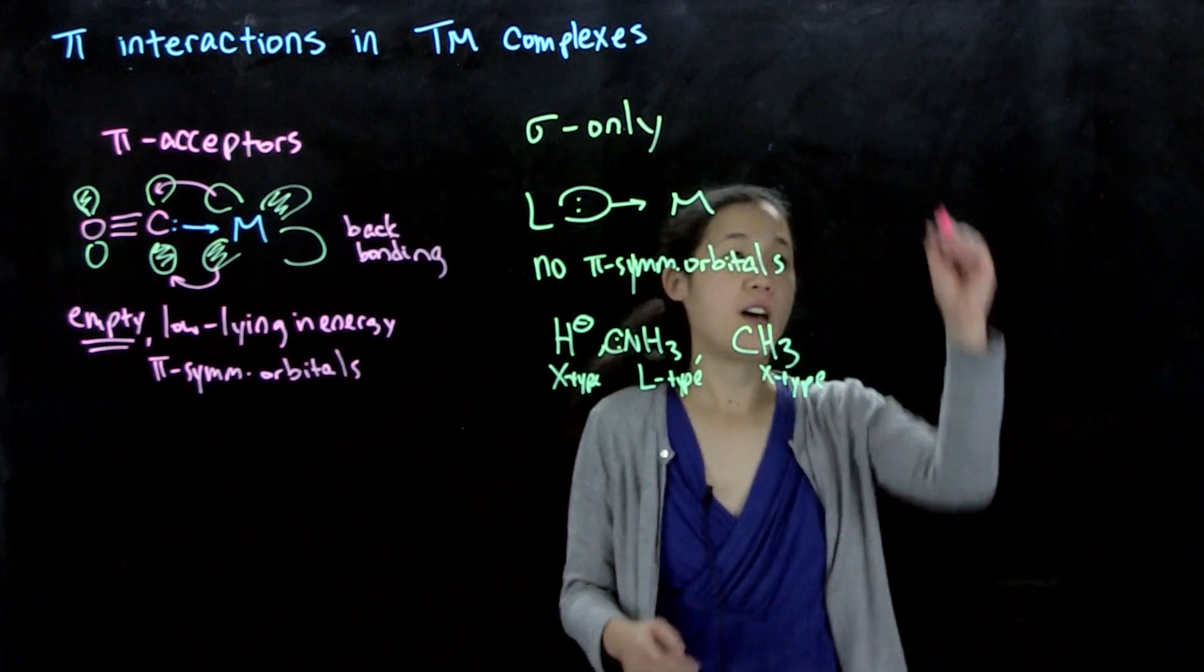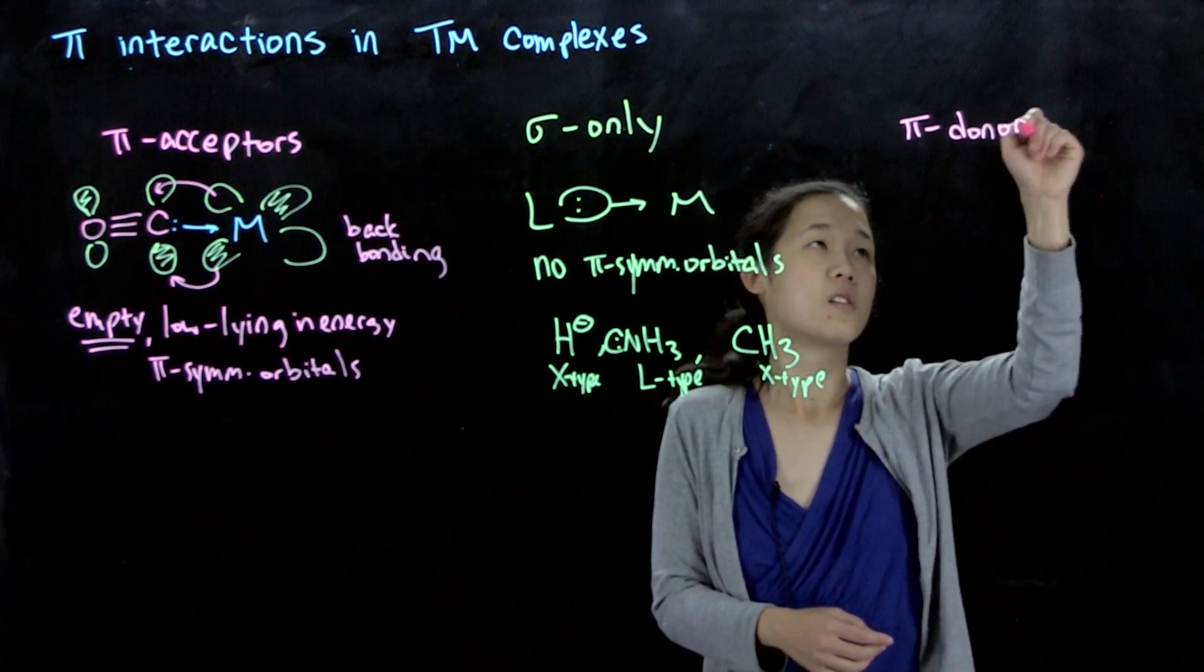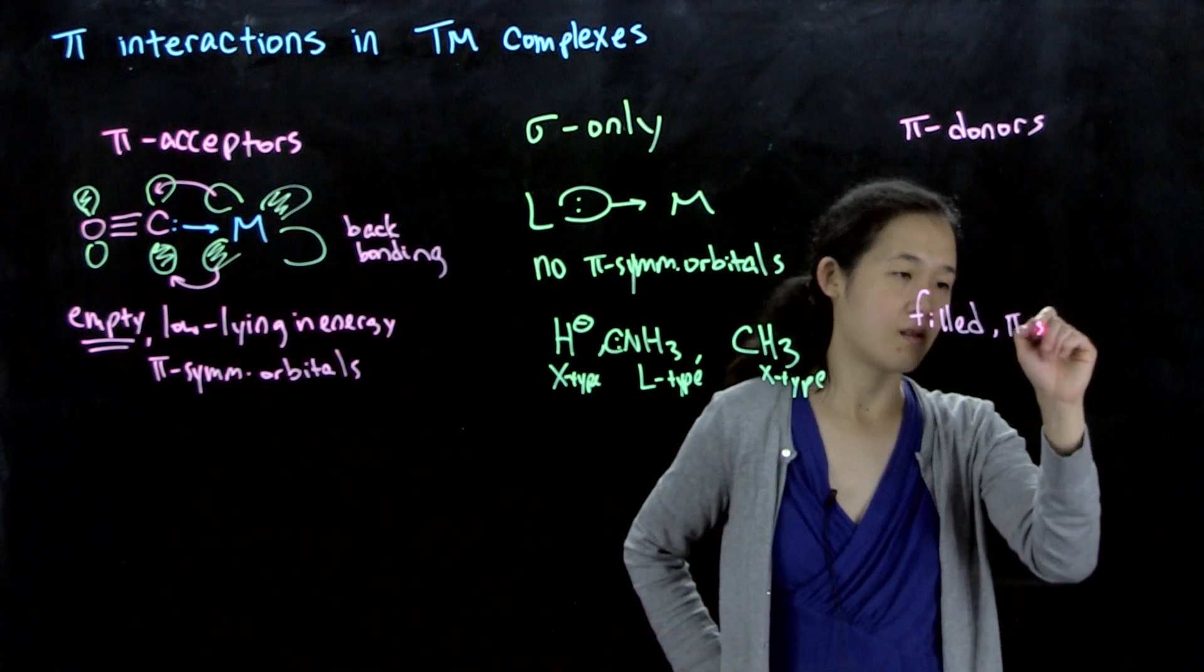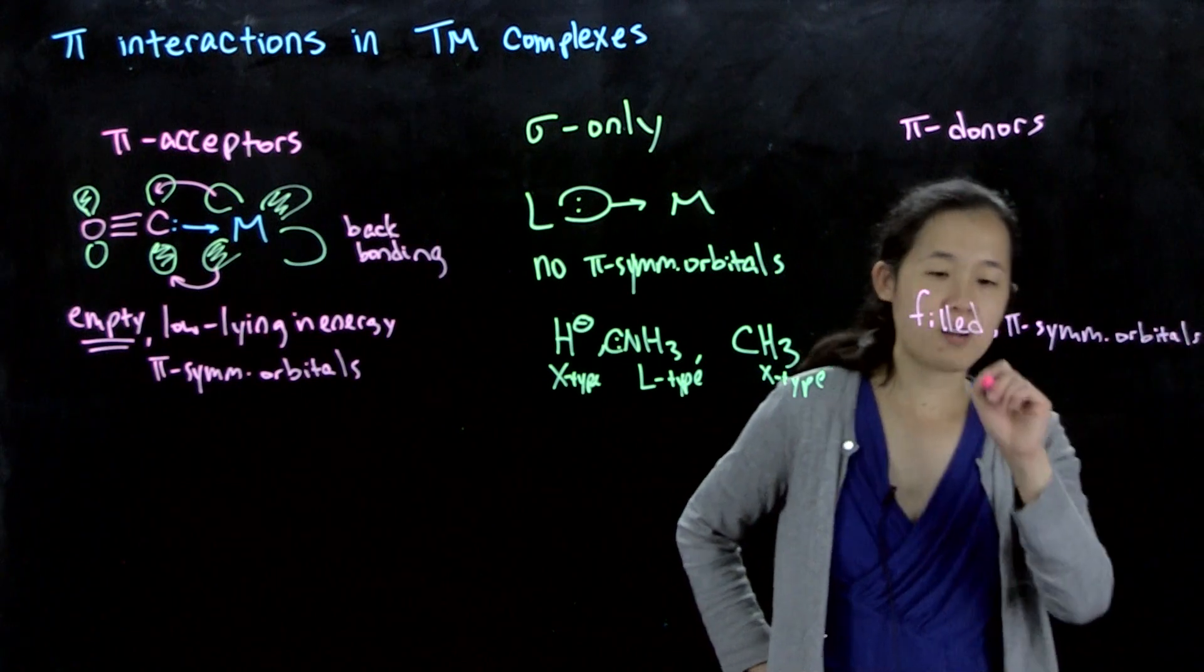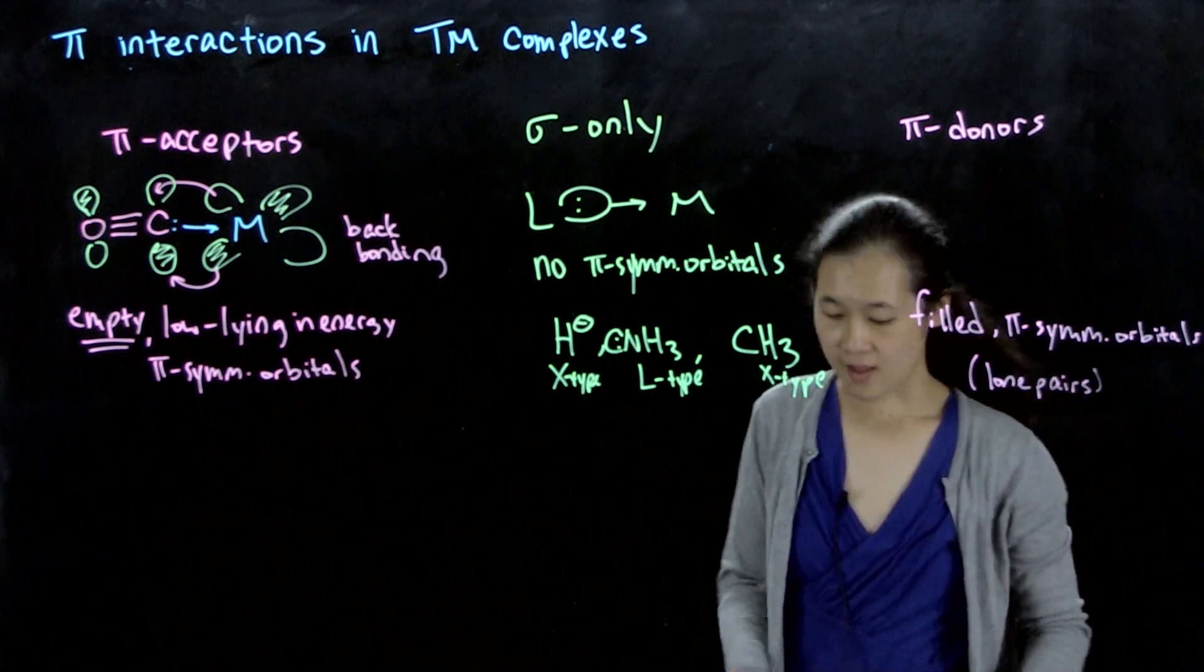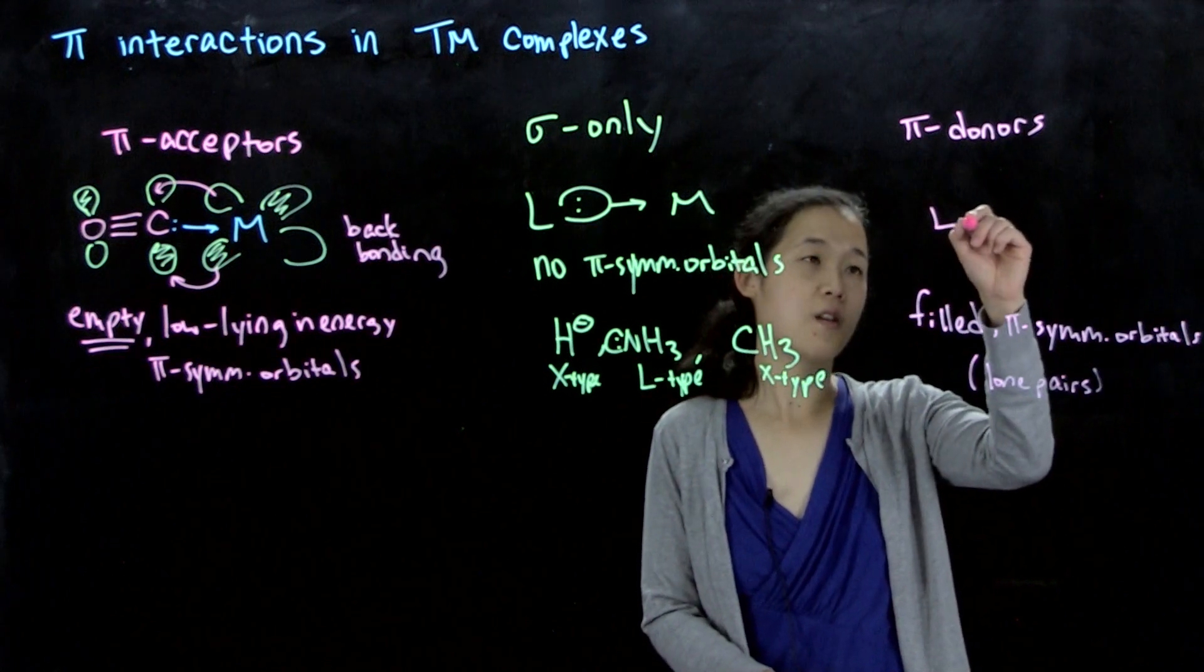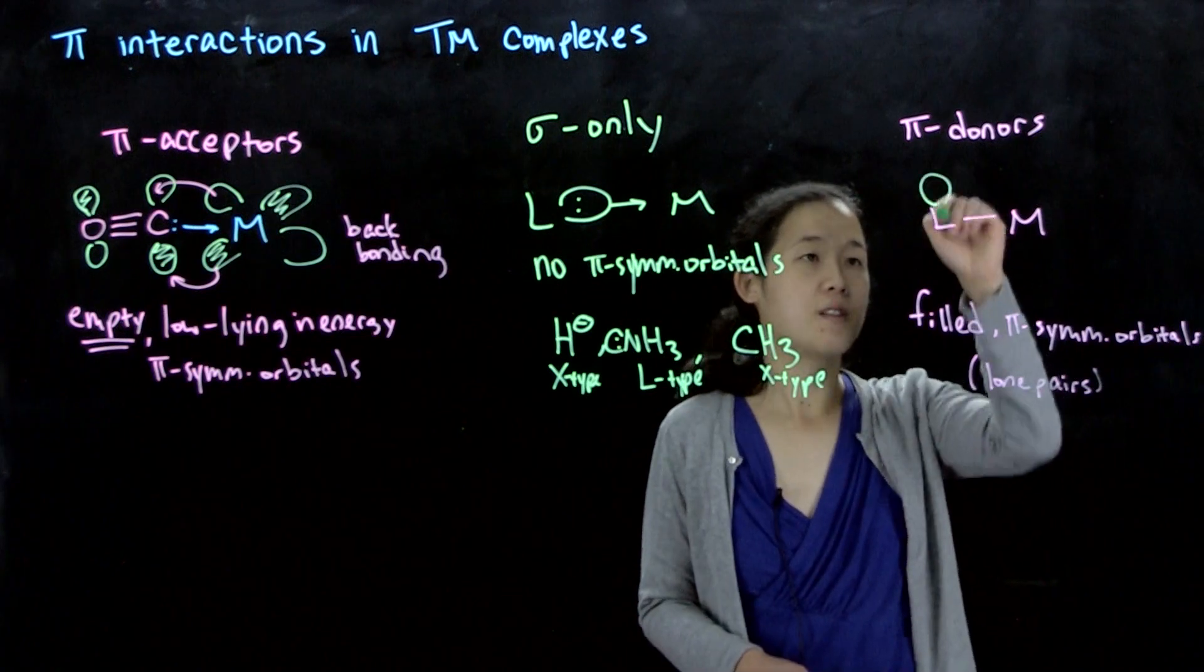That's pi-acceptor. We could also have pi-donors. And here we have filled pi-symmetry orbitals. These are often lone pairs. In this scenario, if we have our ligand, we could also have sigma-bonding to the metal, which I won't draw here.